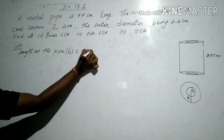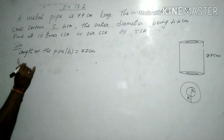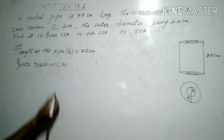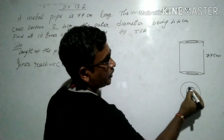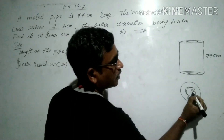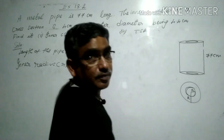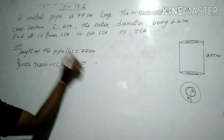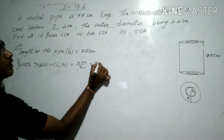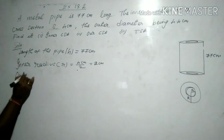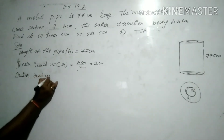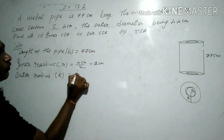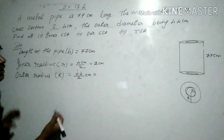Now for the radius: the pipe is a hollow cylinder. This inner circle has an inner radius and the outer circle has an outer radius. The inner radius equals diameter divided by 2, which is 4 divided by 2 = 2 centimeters. The outer radius equals 4.4 divided by 2 = 2.2 centimeters.